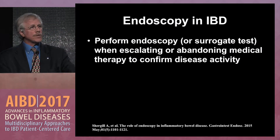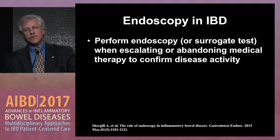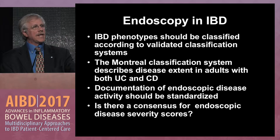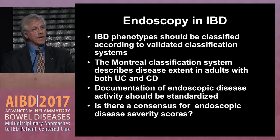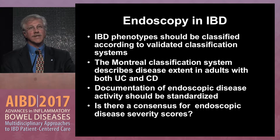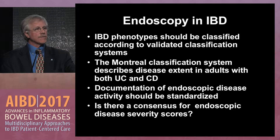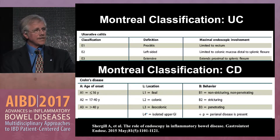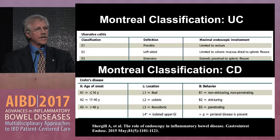Endoscopy in IBD: we want to perform endoscopy or a surrogate test when escalating or abandoning medical therapy to confirm disease activity. The IBD phenotype ideally should be classified using validated classification systems. The Montreal classification is certainly the easiest — E1, E2, or E3 for ulcerative colitis — and for Crohn's disease it looks at age of onset, location, and behavior of penetrating, stricturing, or non-penetrating. We should standardize endoscopic disease activity in our reports.